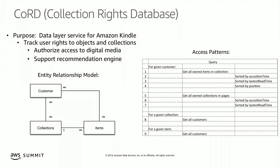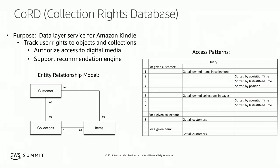Two more access patterns: for a given collection, get all the customers for that collection; for a given item, get all the customers for that item. These are important because the number of customers who own a collection or item can be extremely large. We have to start worrying about scale here. When modeling, we look at the size, velocity, and shape of the data — and those queries will probably bring back the largest result sets.